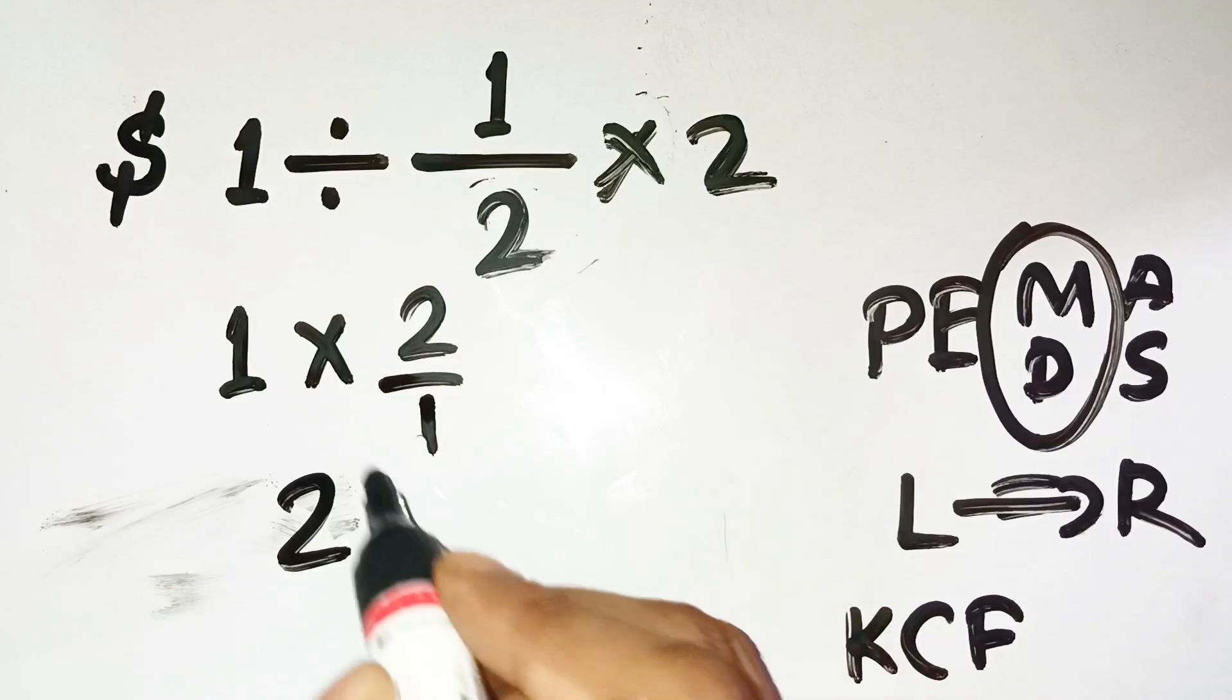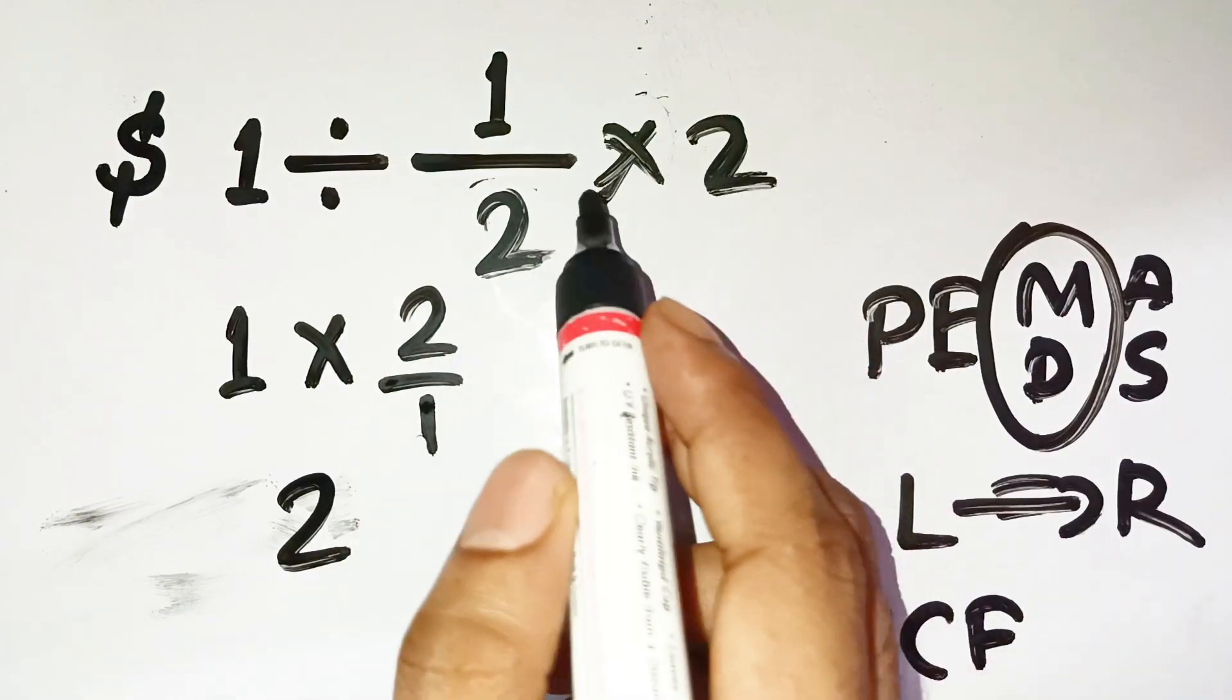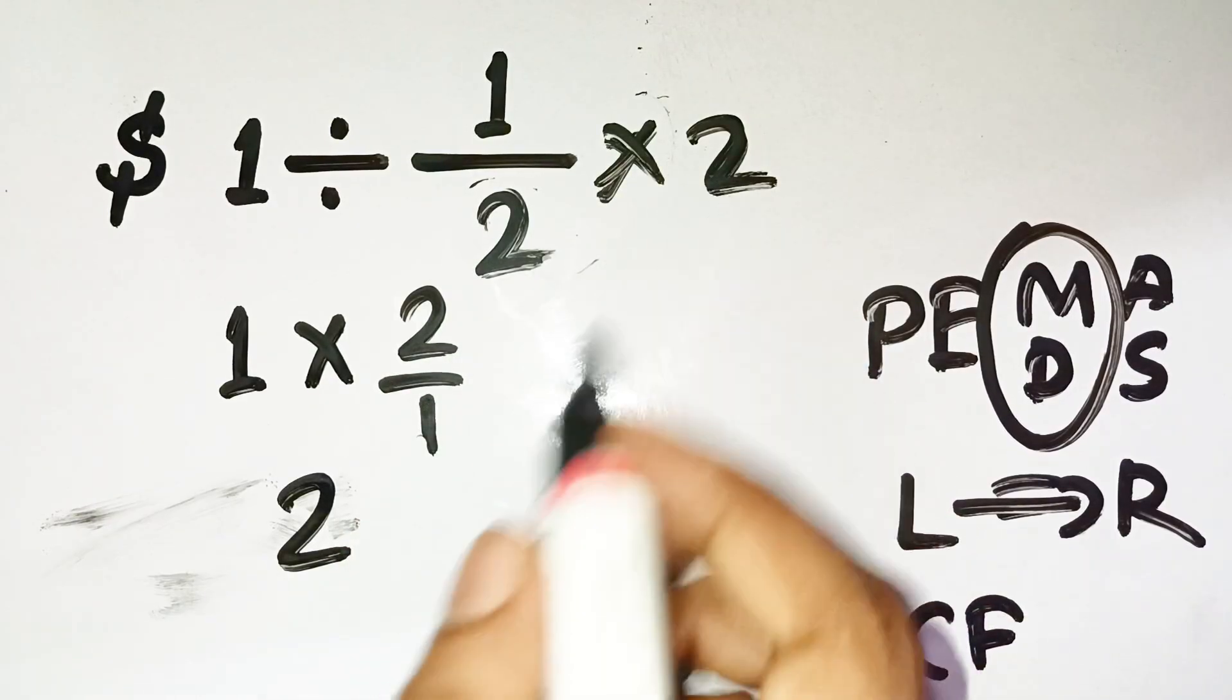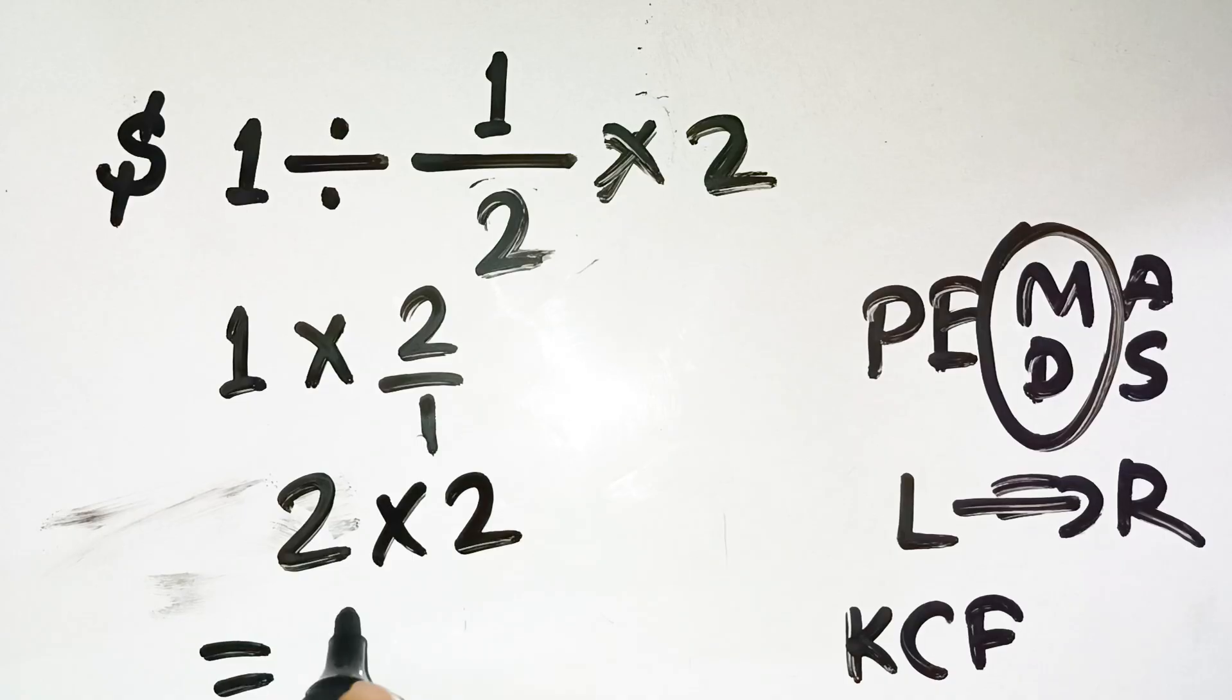Okay, so that takes care of the division. Now we still have 2 × 2 right after it. Multiply that and we get 4. So the correct answer is $4, not $1.